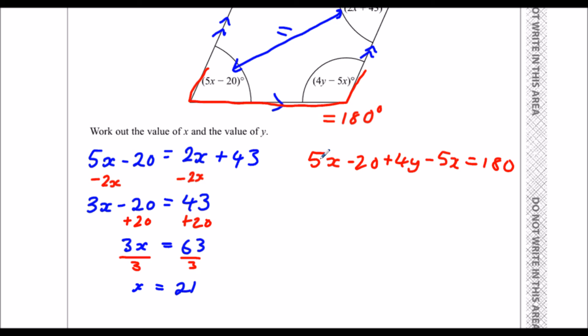I'm going to collect the like terms. I've got 5x minus 5x, which is actually nothing. So that leaves me with just minus 20 plus 4y equals 180.